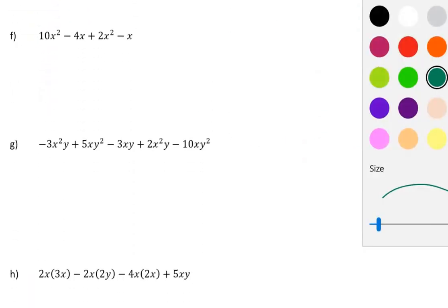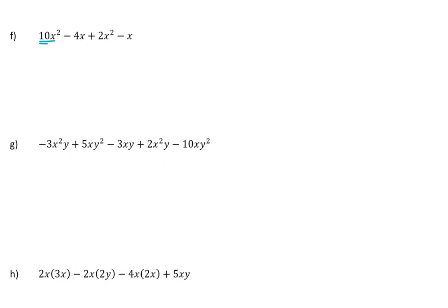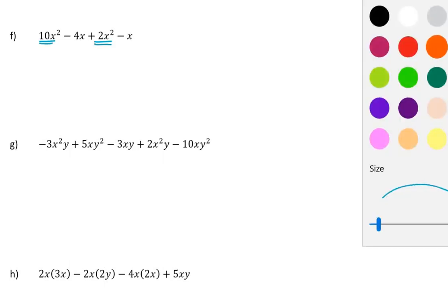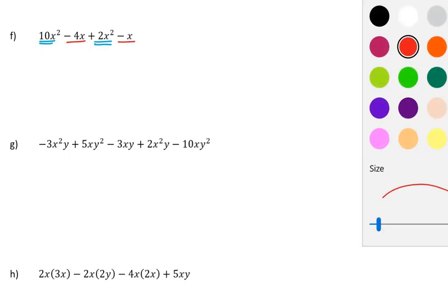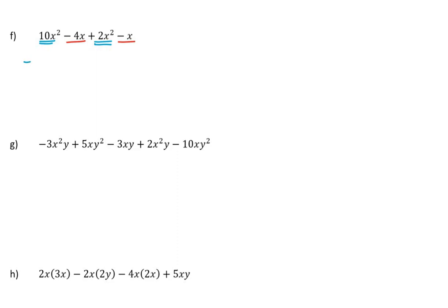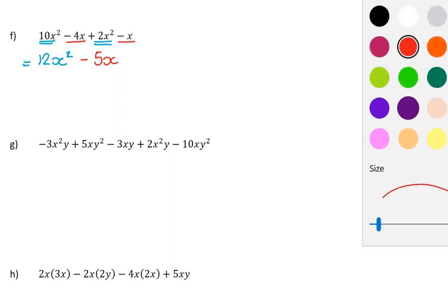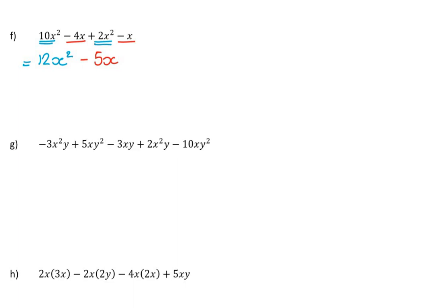This next question has x squared terms, which will be like terms with other x squared terms, and also x terms which are like with x terms. So 10x² + 2x² is 12x² — the exponent didn't change. Then −4x take away another x is −5x. And those two groups are not like terms with each other. So those were examples of where x squared and x are different and not like terms.